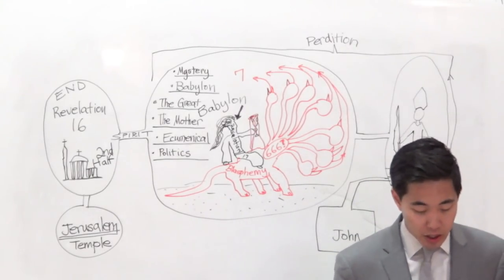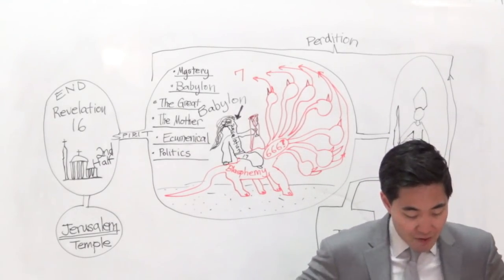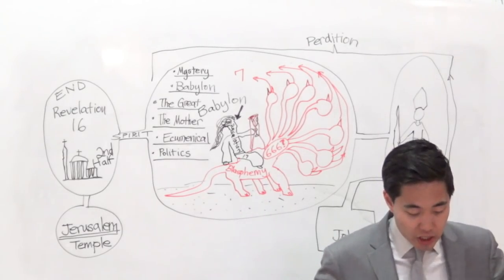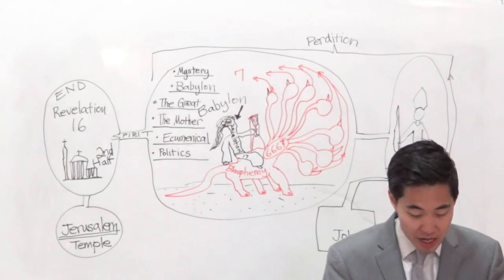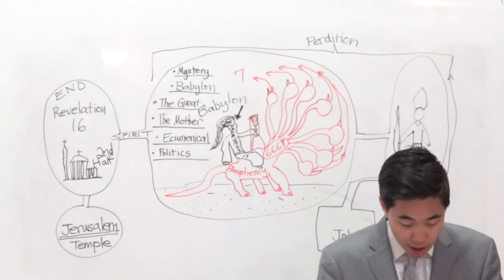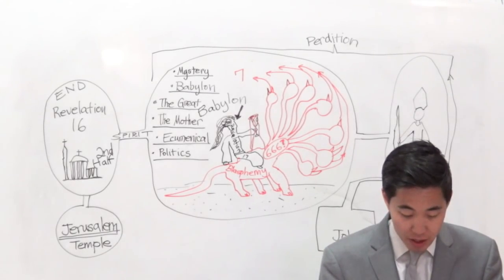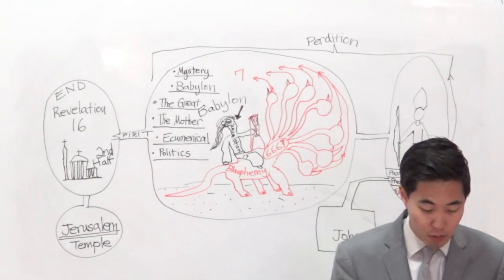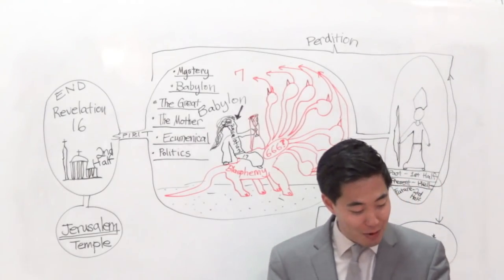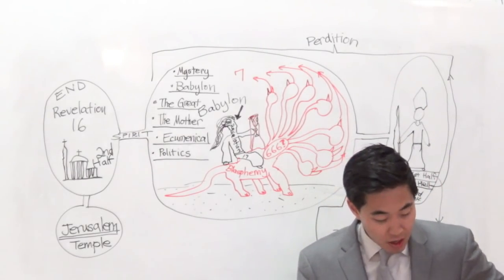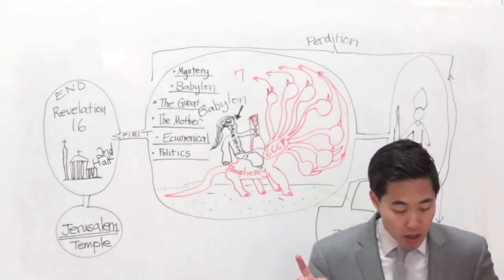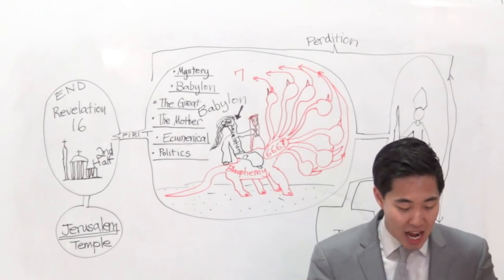Verse 10. Here's the good stuff. And there are seven kings. Five are fallen and one is and the other is not yet come. Oh, I went past the time. I got to end. Sorry, I did not notice. Yeah, I went past the time. I am so sorry, I am so late. I went 11 minutes past the time. I will end it here.